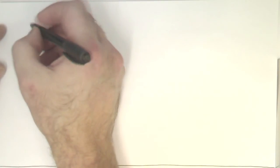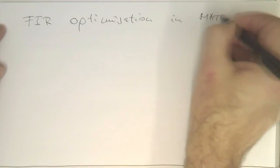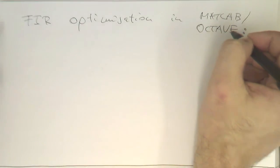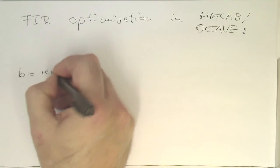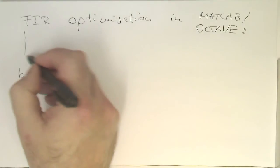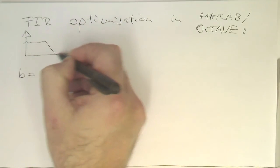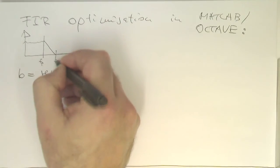This is FIR optimization in MATLAB or Octave. The function we use for this is called REMAS. In order to understand this function, let's just draw again a diagram here. We have our filter response here.